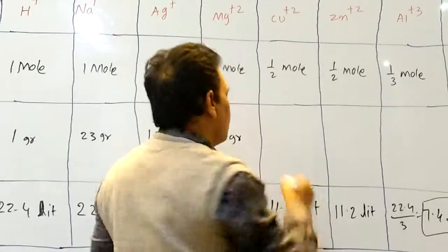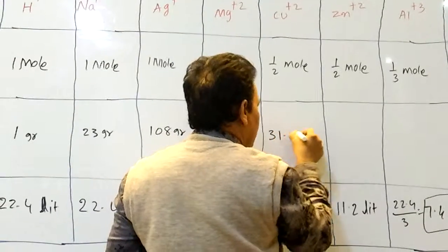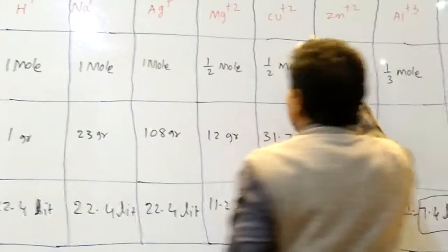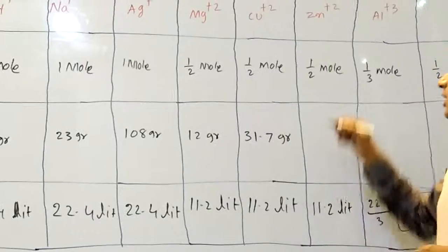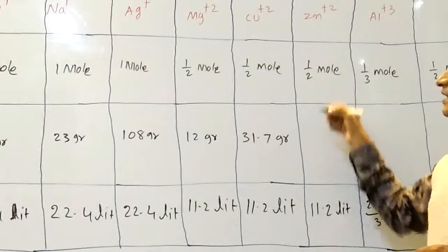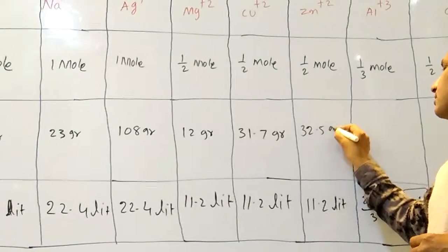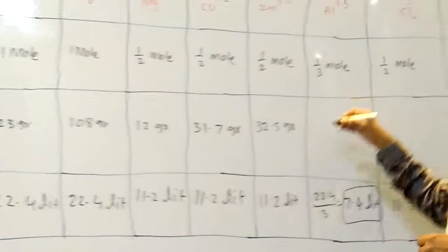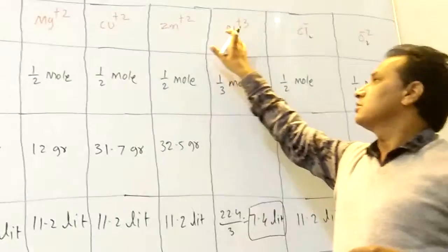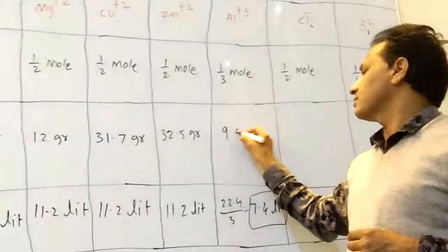Here, copper is 31.7 grams, gram equivalent weight of copper. And zinc, gram equivalent weight of zinc is 32.5 grams. And gram equivalent weight of aluminum, aluminium is 27 by 3, that is 9 grams.